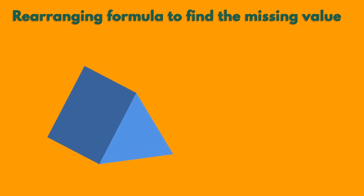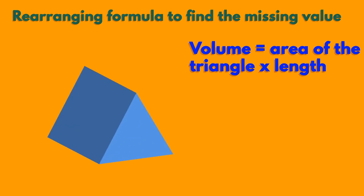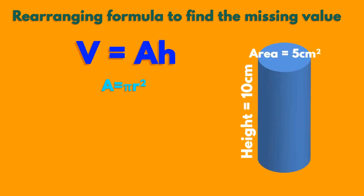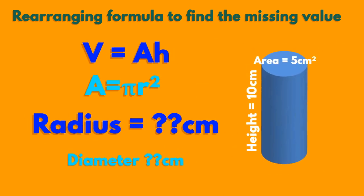Rearranging formula is an important skill for us to develop. We can find the length of a prism if we know the volume and area of the base. We do this by changing the subject of the formula. Look at this problem. Changing the subject of it helps us find the solution. Changing the subject also helps us to calculate the radius or diameter of a cylinder when we know the dimensions.